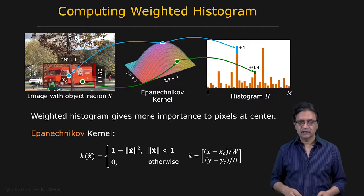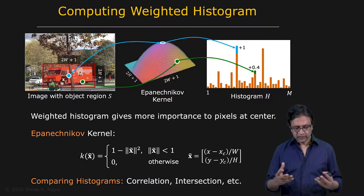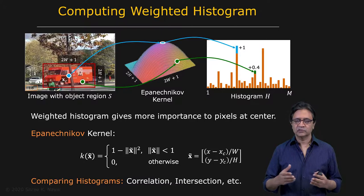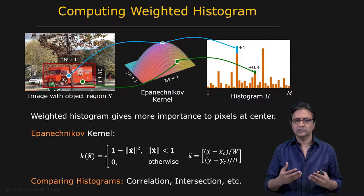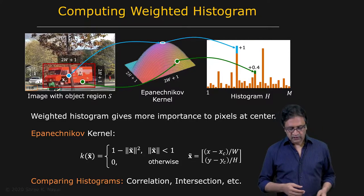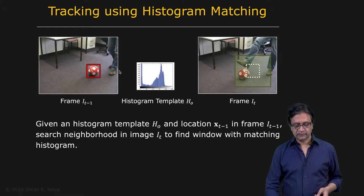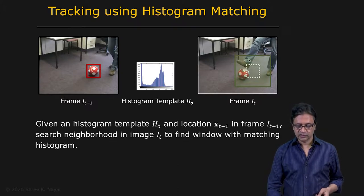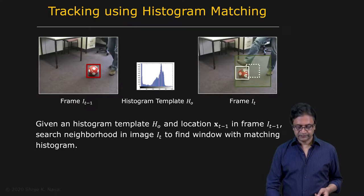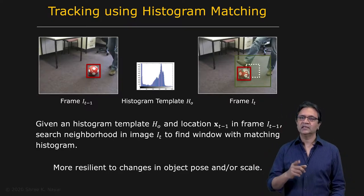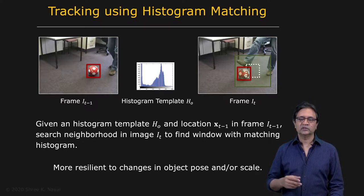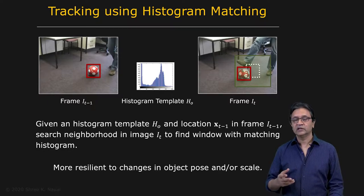These weighted histograms are then used to match from one frame to the next, much like template matching. For comparing histograms, you can use correlation, sum of squared differences, or something more sophisticated like the intersection of histograms — a popular technique that makes histogram-based matching more robust to occlusion. You match the histogram of the image region to histograms in the next frame to find the best match. This tends to be more resilient than appearance-based template matching to changes in object pose, scale, illumination, and occlusion.